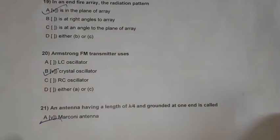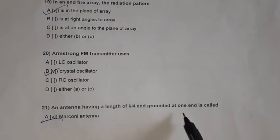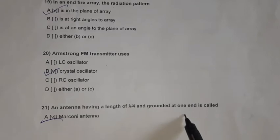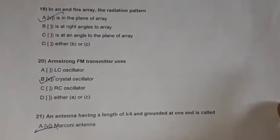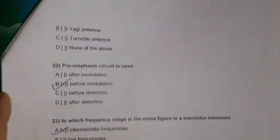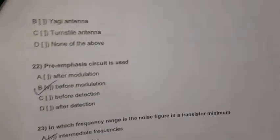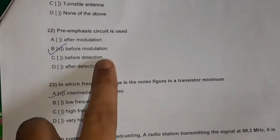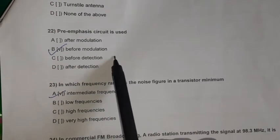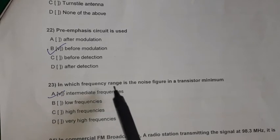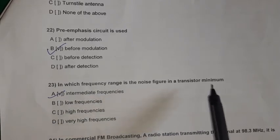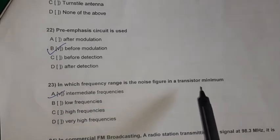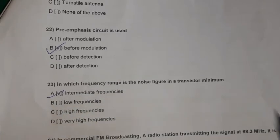Question 21: An antenna having a length of lambda/4, ungrounded at one end, is called a Marconi antenna. Question 22: Pre-emphasis circuit is used before modulation. Question 23: In which frequency range is the noise figure in a transistor minimum? It is at intermediate frequencies.